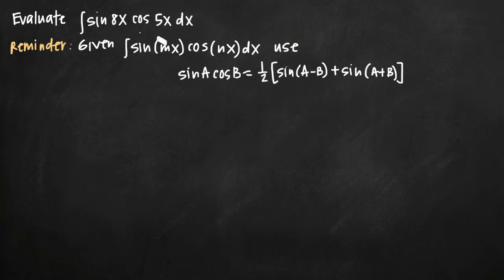So all you want to do here is identify your values of a and b. And obviously since we have sine of a and sine of 8x, a is equal to 8x. We have cosine of b and we have cosine of 5x, so we know that b will be equal to 5x. And now we can go ahead and use our identity to simplify.